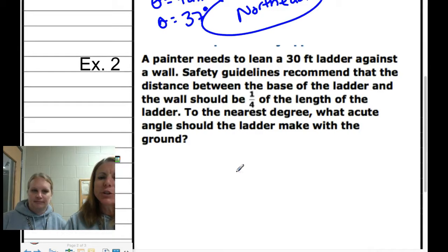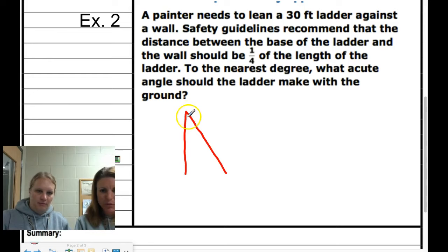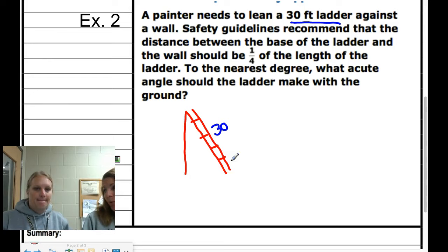Example 2: A painter needs to lean a 30-foot ladder against a wall. Here's my wall, here's my ladder. The ladder is 30 feet - students often make the mistake of putting the 30 at the wall, but it's a 30-foot ladder, so that's how long the ladder is. Let's make our 90-degree triangle and keep reading.